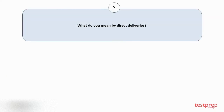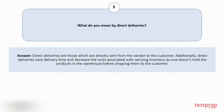Question number 5: What do you mean by direct deliveries? Direct deliveries are those which are directly sent from the vendor to the customer. Additionally, direct deliveries save delivery time and decrease the costs associated with carrying inventory, as one doesn't hold the products in the warehouse before shipping them to the customer.